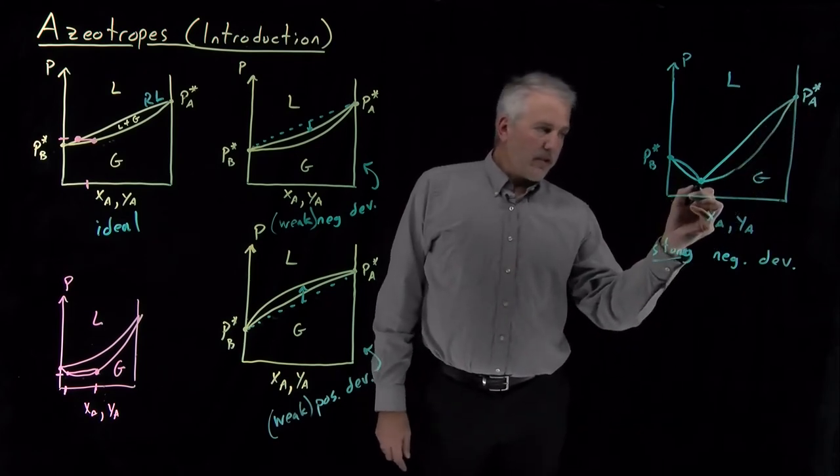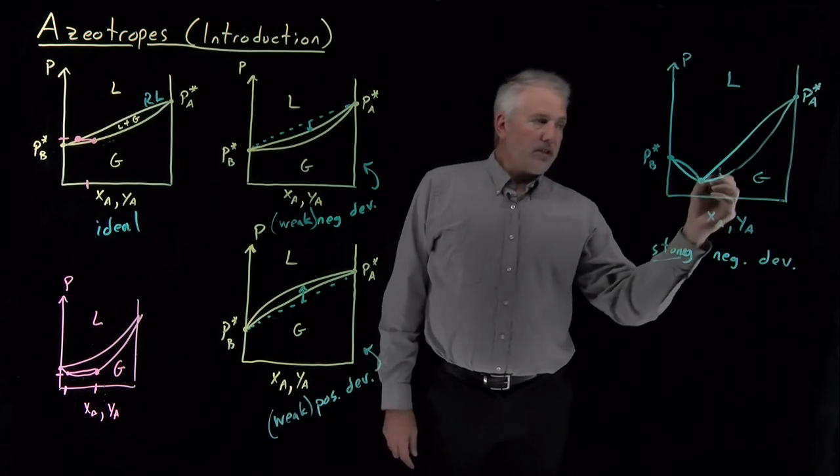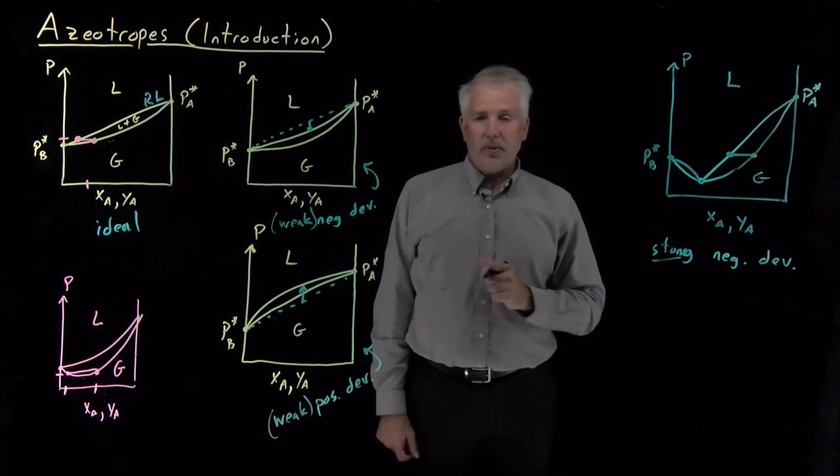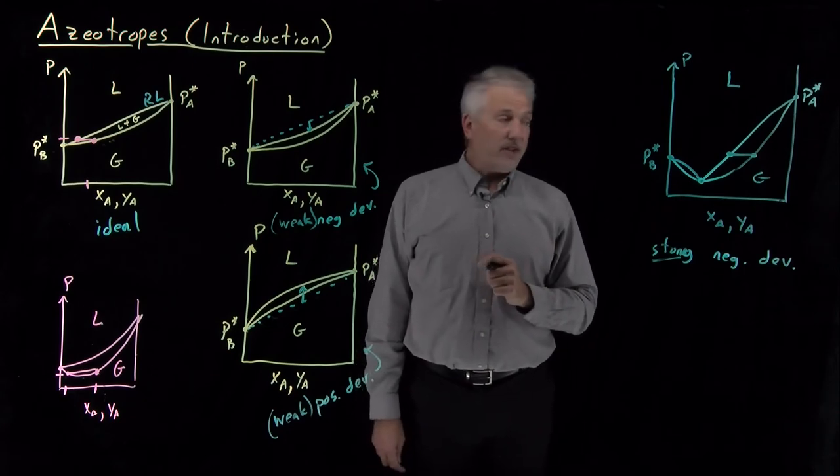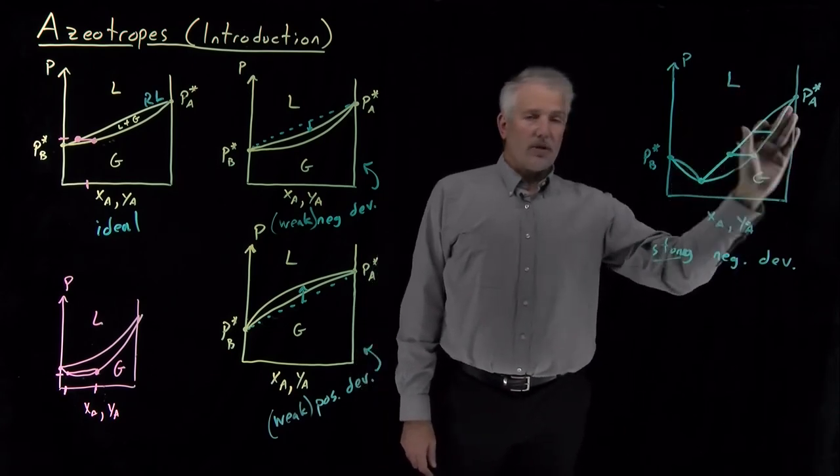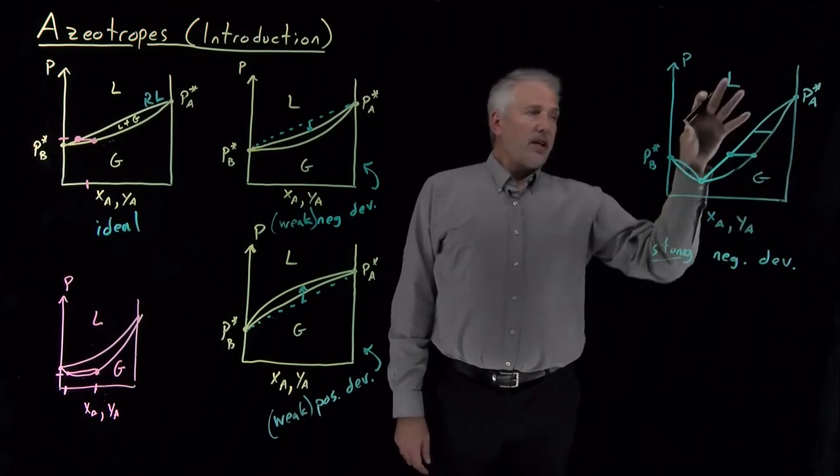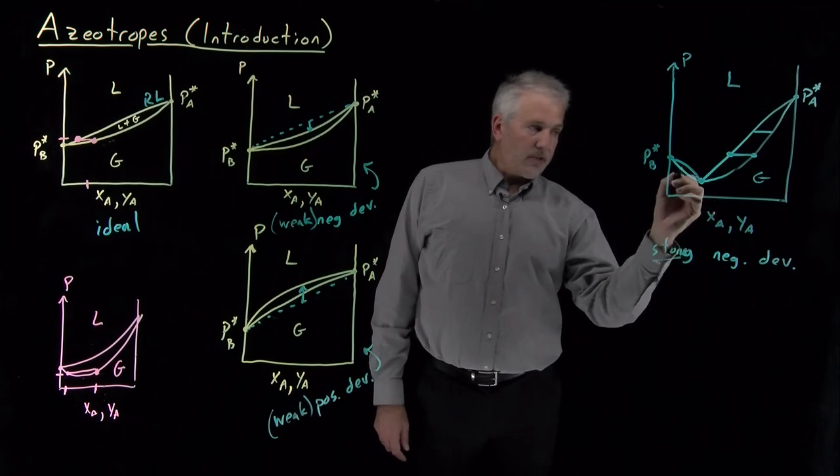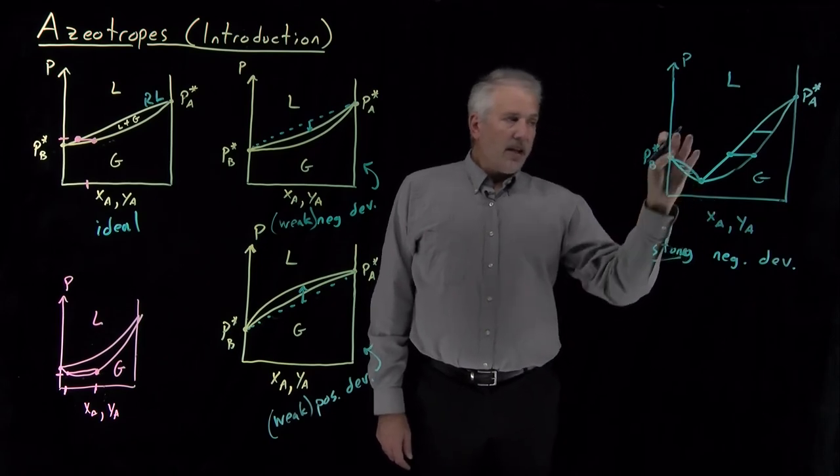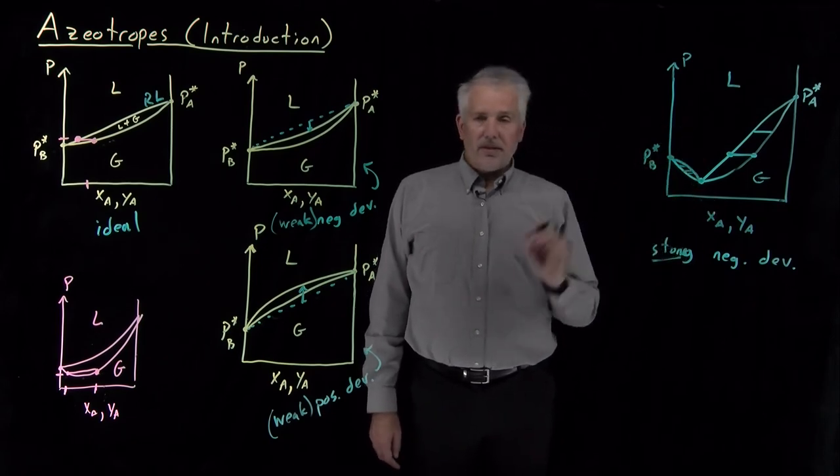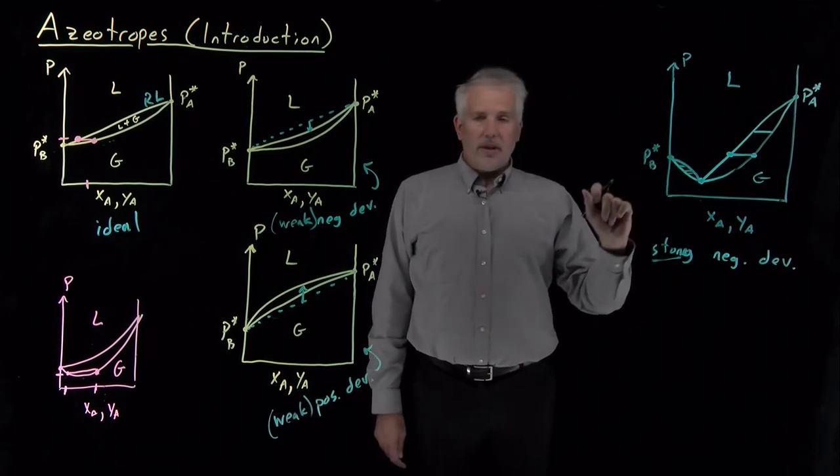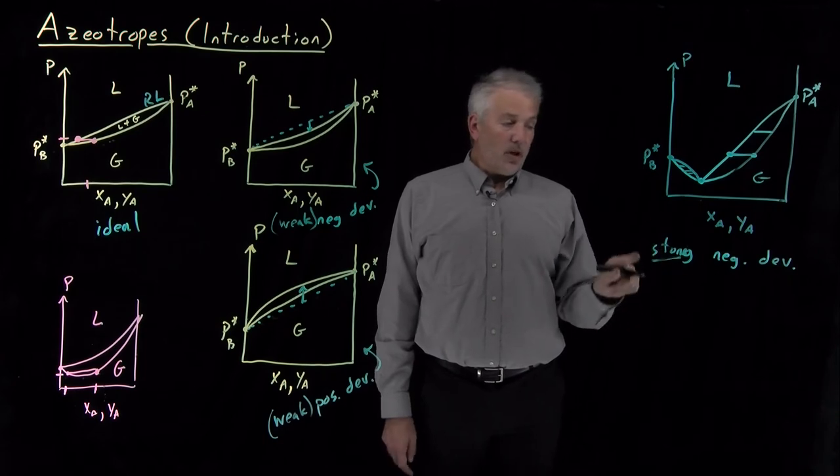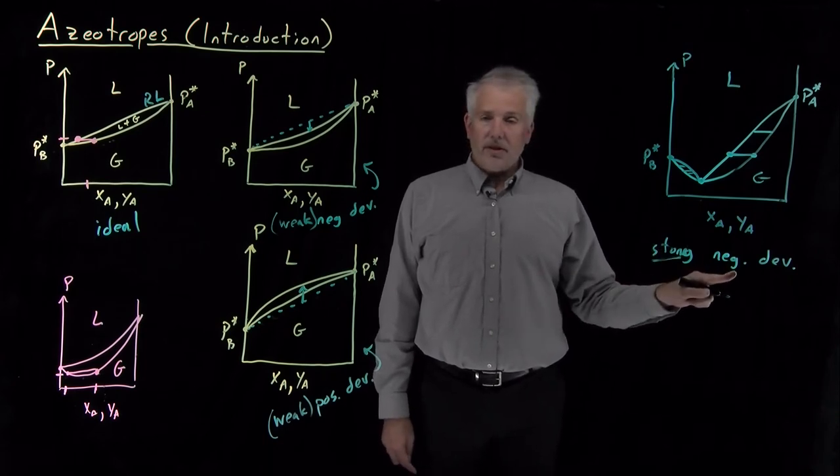But again, when this curve undergoes a minimum, we're always going to have equilibrium between a liquid phase and a gas phase, never between a gas phase and a different gaseous phase. So these tie lines will always connect liquid on one side and gas on the other. So the liquid phase dips down and meets the gas phase curve at this point. So we'll have tie lines over here that connect the liquid phase with the gas phase as well. So this is what the pressure composition phase diagram looks like for the case where we have strong negative deviations from Raoult's law.